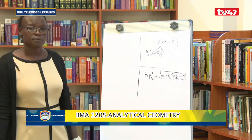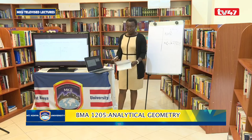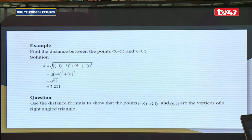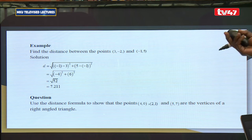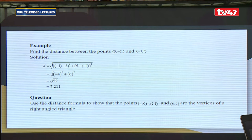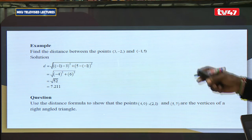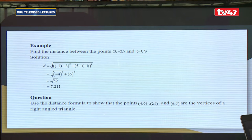For example, find the distance between the point (3, -2) and (-1, 5). We have x1 = 3, x2 = -1, y1 = -2, and y2 = 5. Using the distance formula, we get the distance as the square root of (-1 minus 3) squared plus (5 minus -2) squared, which gives us 7.211.